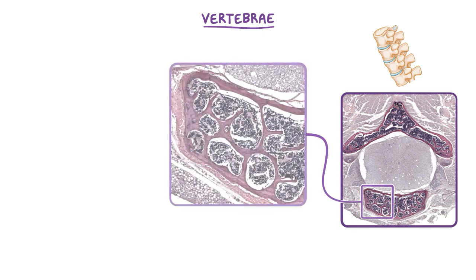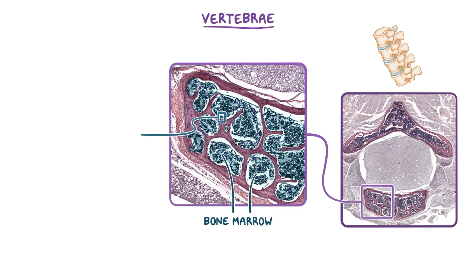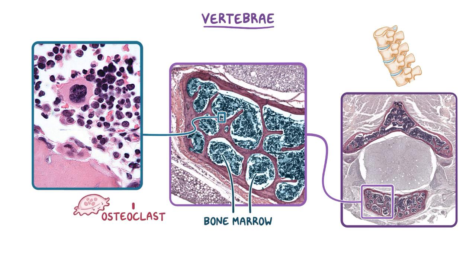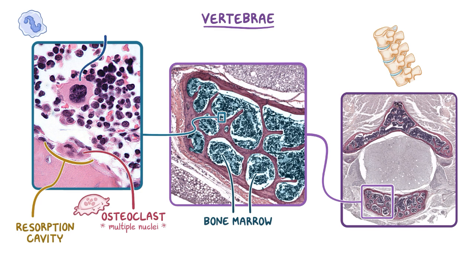In this image, we can also see that the bone marrow is still present within the spaces formed by the spicules. The osteoclast can be found within the bone marrow. Here, the osteoclast is sitting within a resorption cavity it formed on the surface of the bone matrix. Identifying the multiple nuclei within the osteoclast can help differentiate it from other similar-looking cells like megakaryocytes, which only have a single, multi-lobe nucleus.